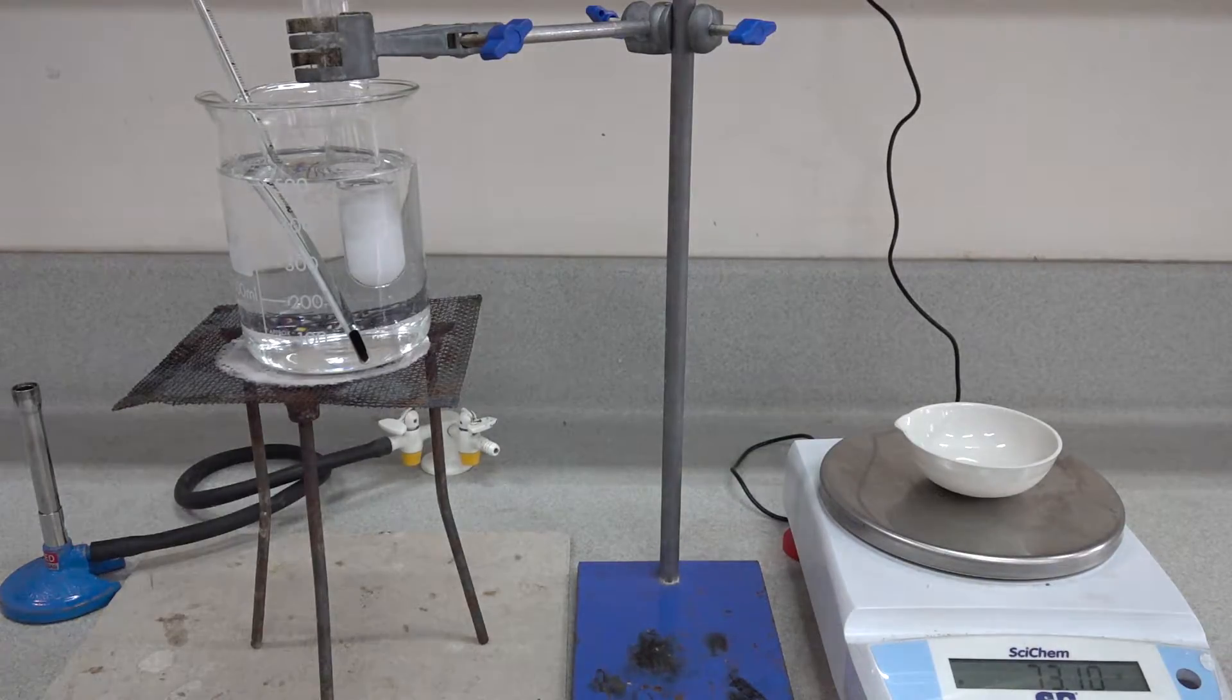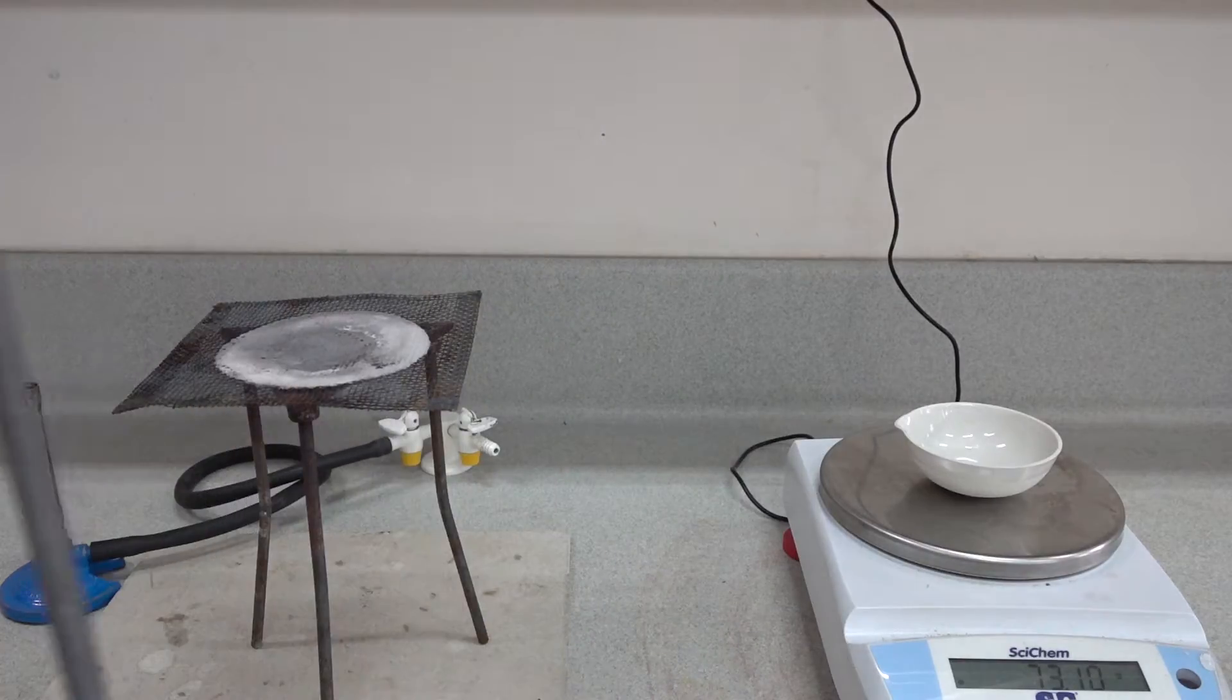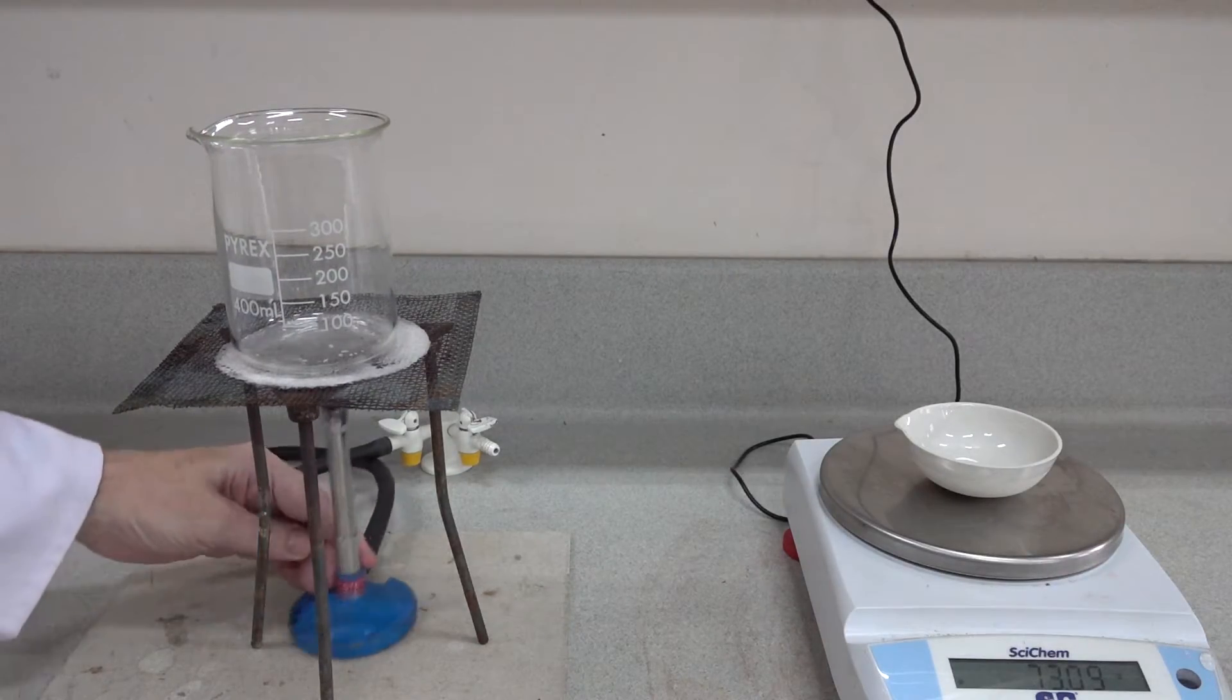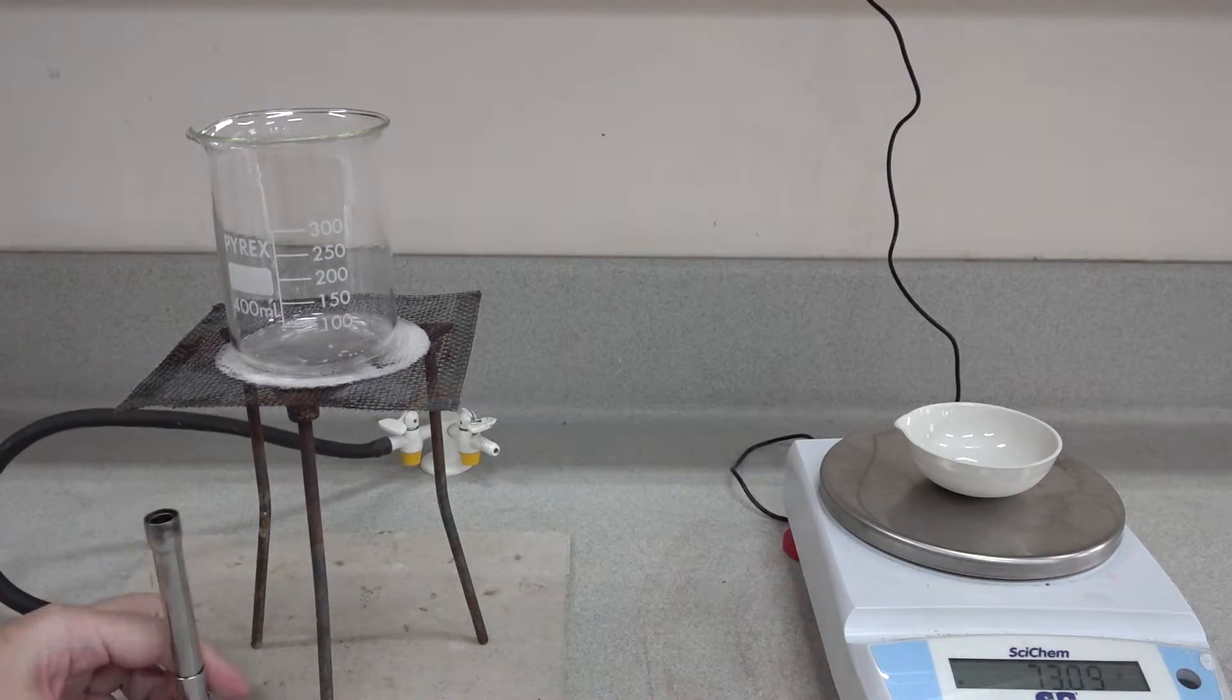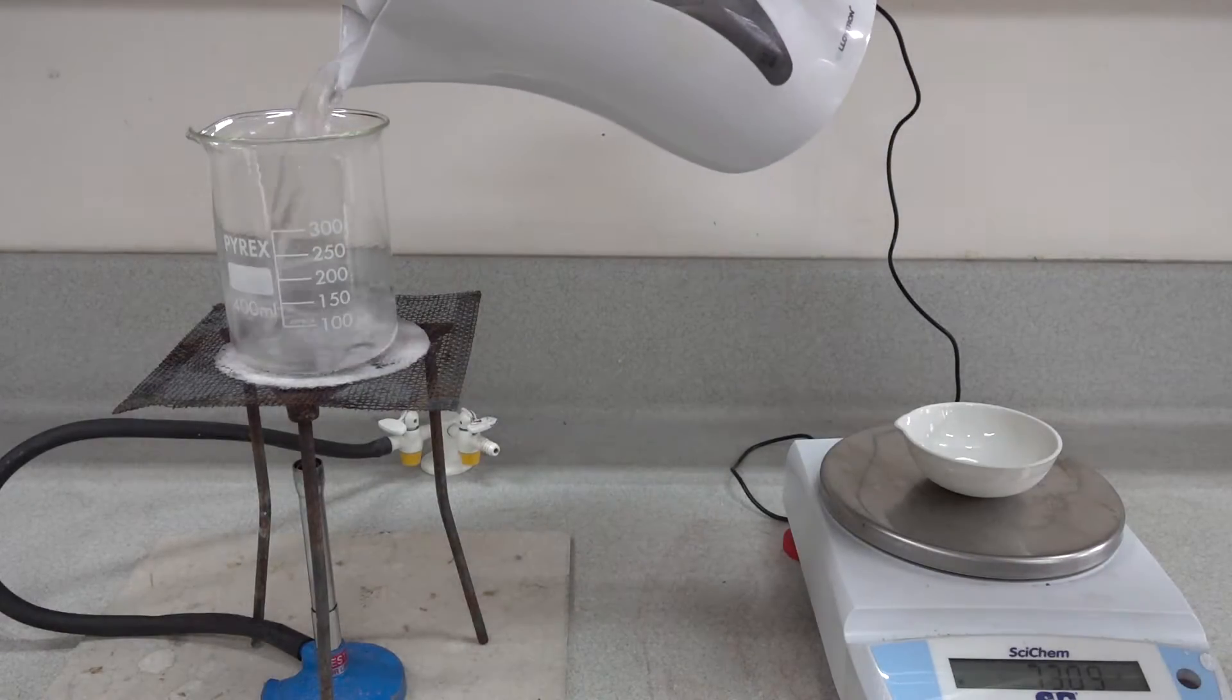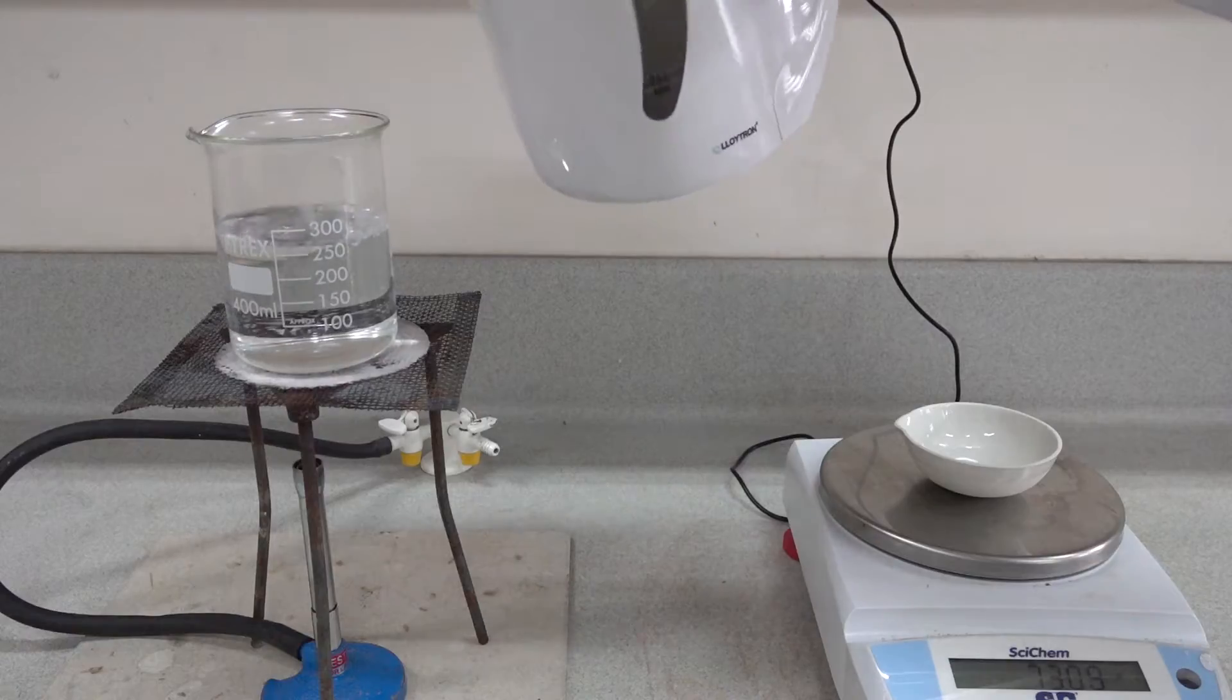We can now dispense with the water bath and the potassium nitrate, and we now need to introduce a water bath on which we can evaporate our solution. So a kettle of hot water here will provide the starting water.